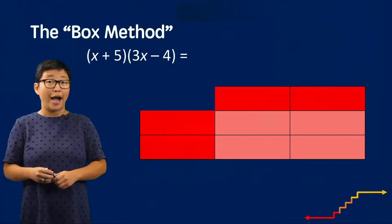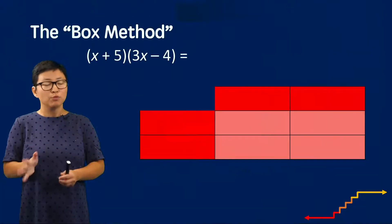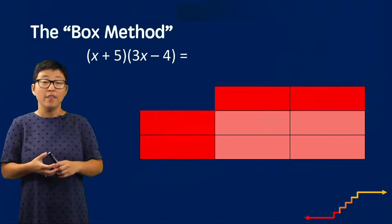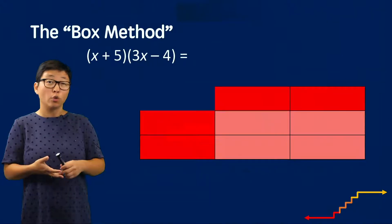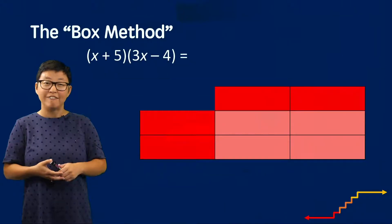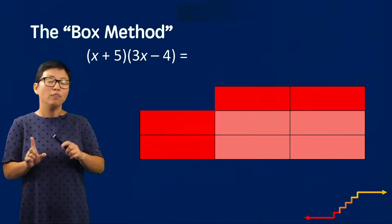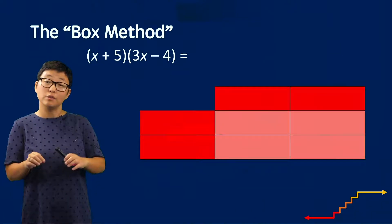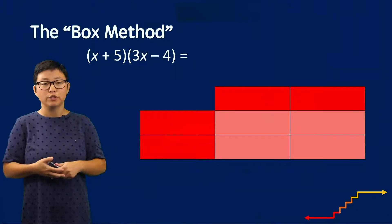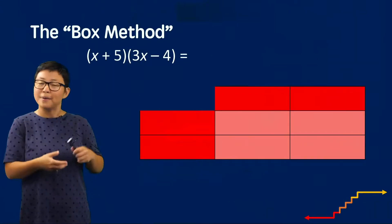Even though there's no hierarchy of representational types, it's really common for students to first start with concrete representations, then engage with pictorial representations, and then finally feel more comfortable and confident using abstract representations. Along the way from pictorial to abstract representations, it can be helpful to introduce students to a graphic organizer — and this is where the box method comes in.